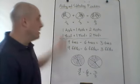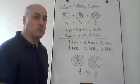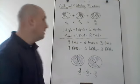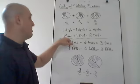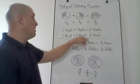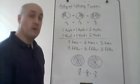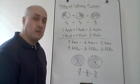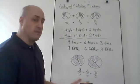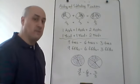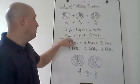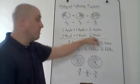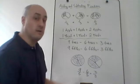Think about it like this: one apple plus one apple equals two apples. Think about it in terms of words — one-third plus one-third equals two-thirds. Whether it's a third or an apple, if I add one of them plus another one, I get two of them. So one-third plus one-third equals two-thirds.